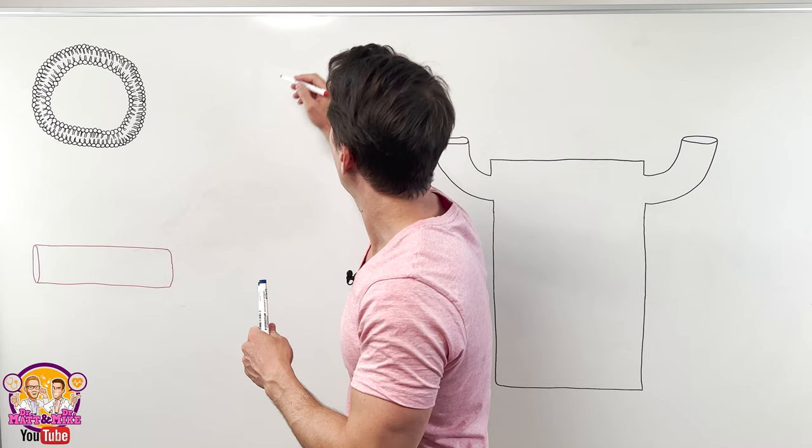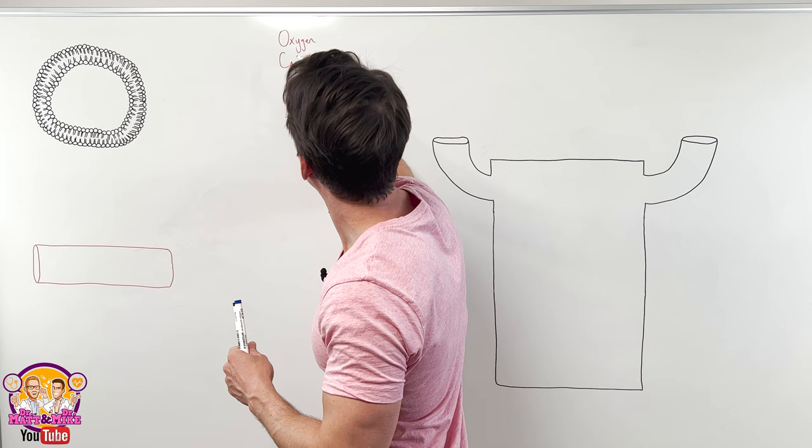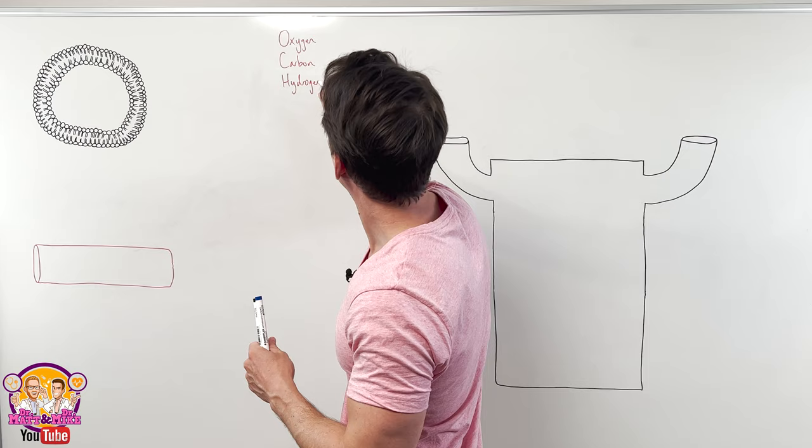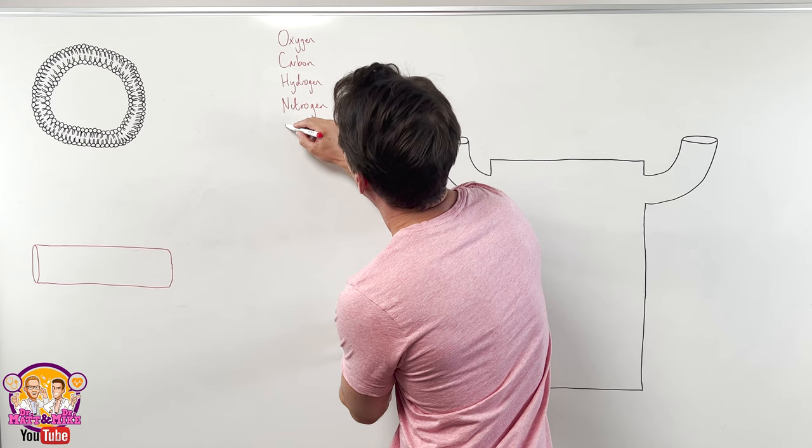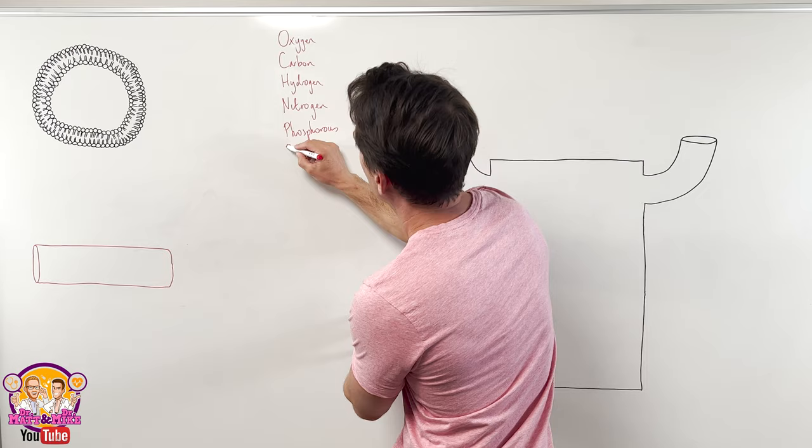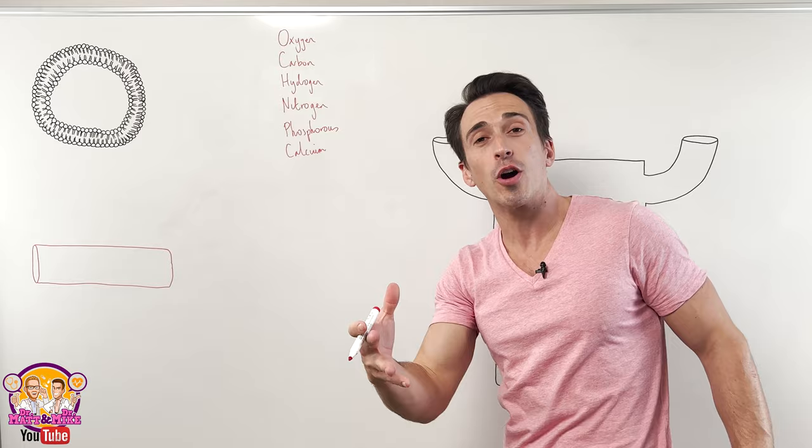oxygen, carbon, hydrogen, nitrogen, phosphorus, and calcium. That's it. These six make up around about 99% of you.